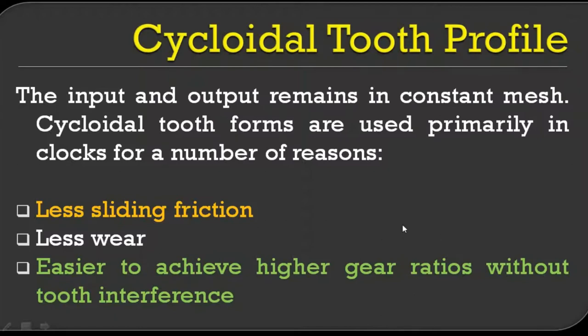Gear ratio is the number of teeth on the gear divided by the number of teeth on the pinion — that is the gear ratio, and it is different from the contact ratio. Another advantage of cycloidal profiles is operation without tooth interference. Interference is an undesirable effect in gear drives — it is the digging of a gear tooth into the pinion surface, or the digging of a pinion tooth into the gear surface, which is an undesirable effect in power transmission and should be avoided.